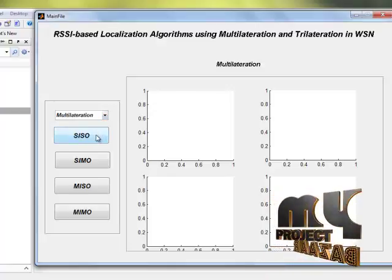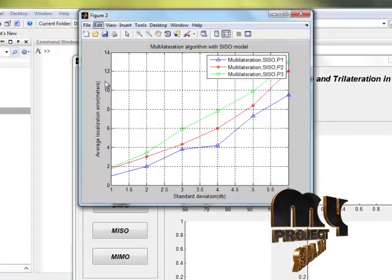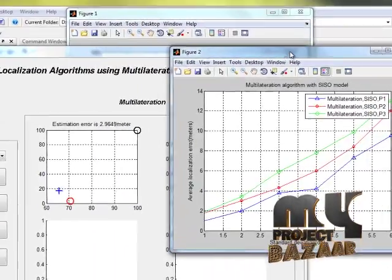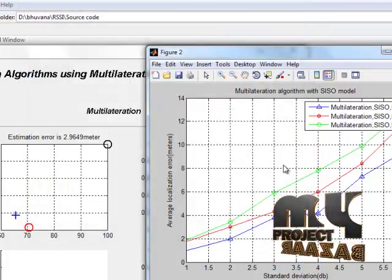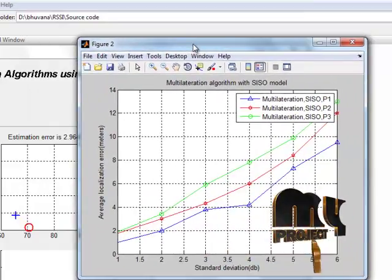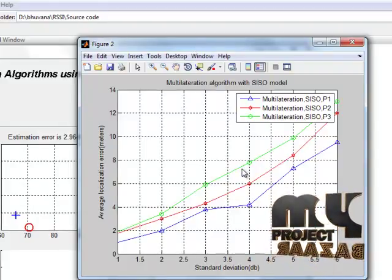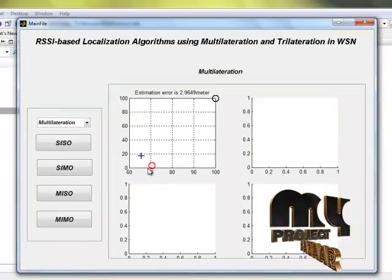SISO means single input with single output. Here the anchor node and mobile nodes are presented in figure 1. This is the graph for the difference between standard deviation and error. It is plotted for single input with single output. This is the mobile location which is estimated.